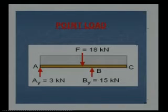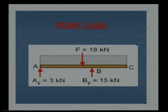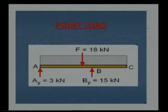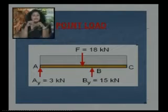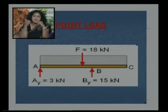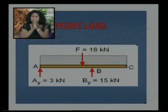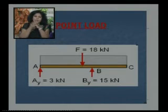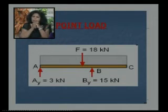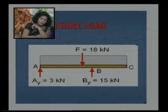Starting with the point load: whenever a human being is standing on a particular place, his whole weight is concentrated on the CG — that is, concentrated at the center — and that particular center is the point load. Another example is an RCC column whose self weight is concentrated in the form of a point load. In this figure we can see a point load F equal to 18 kilo Newtons, with reactions at A and B of 3 kilo Newtons and 15 kilo Newtons.